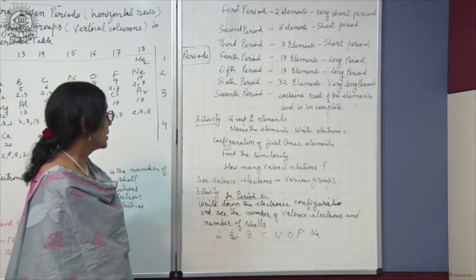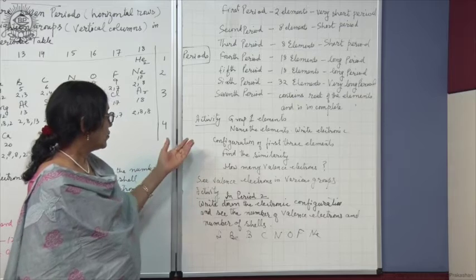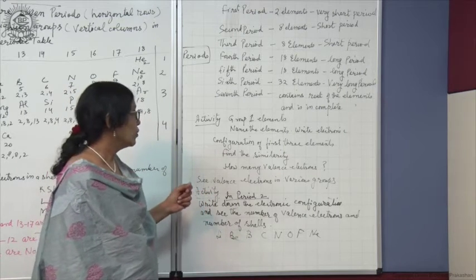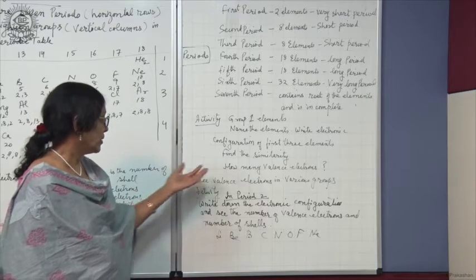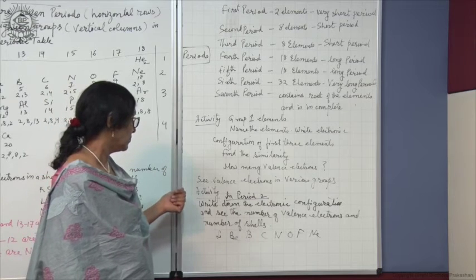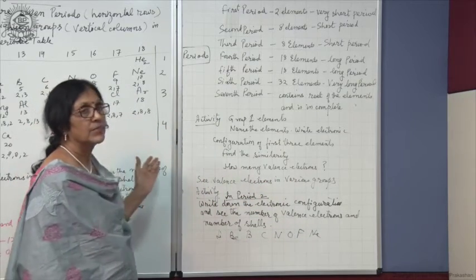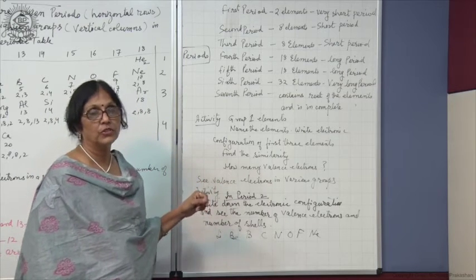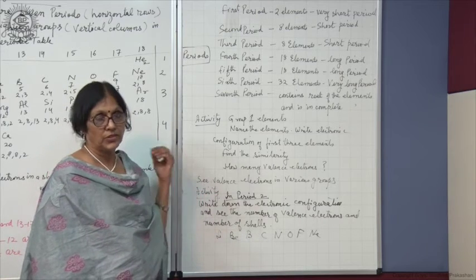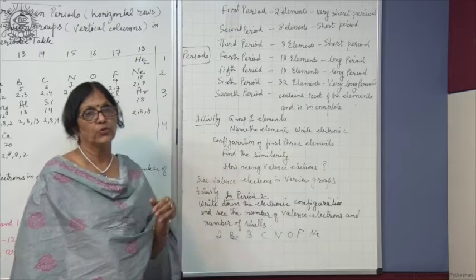Do an activity yourself: write down group 1 elements, name them, and write the electronic configuration of the first 3 elements. Find out the similarity between group 1 elements — on the basis of the number of valency electrons and valency, you can find the similarity. Also see the valency electrons in different groups. The number of valency electrons in each group is the same, which you can verify by writing elements from atomic number 1 to 20 in the Modern Periodic Table.